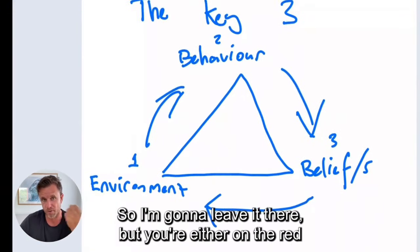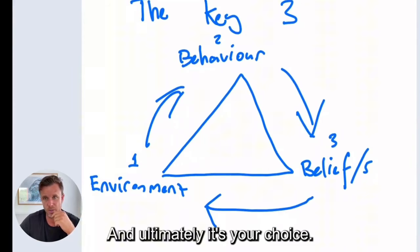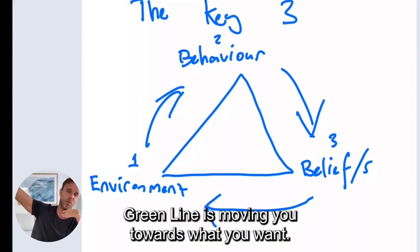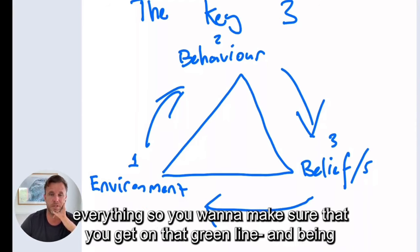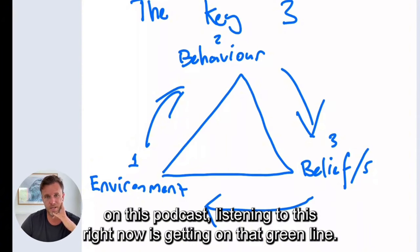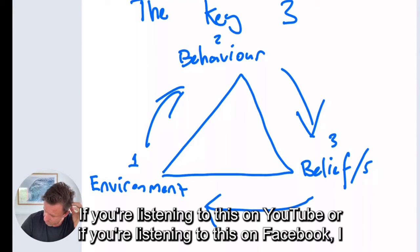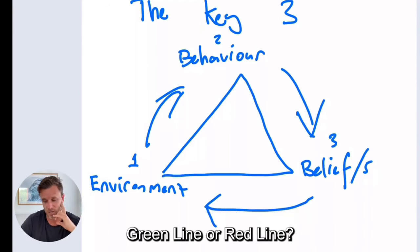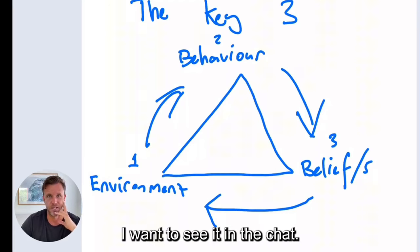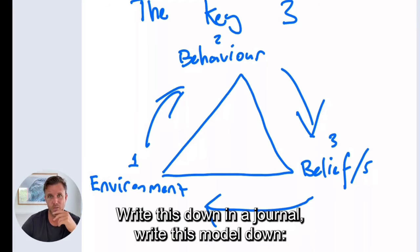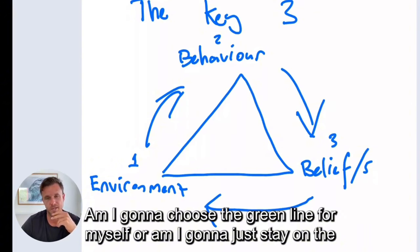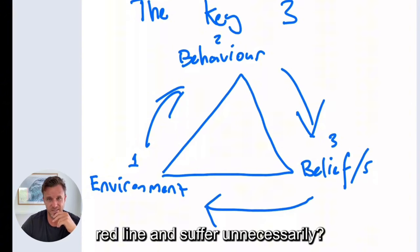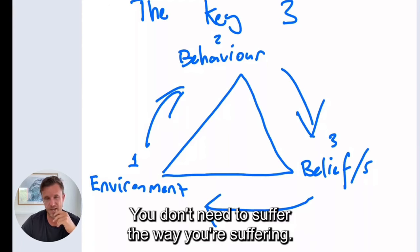So I'm going to leave it there. You're either on the red line or you're on the green line. And ultimately, it's your choice. Green line is moving you towards what you want. Red line is drifting you towards more of what you don't want. And time compounds everything. So you want to make sure that you get on that green line. And being on this podcast, listening to this right now is getting on that green line. If you're listening to this on YouTube, or if you're listening to this on Facebook, I want you to write, what are you choosing? Green line or red line? Type it in right now. Write this down in a journal. Write this model down. Environment, behavior, beliefs. What do I need to change? And what am I choosing?